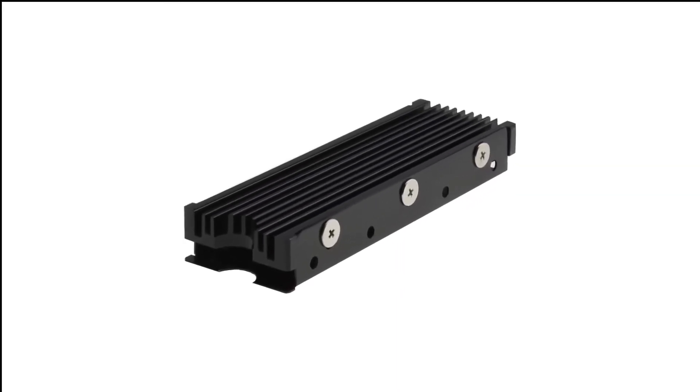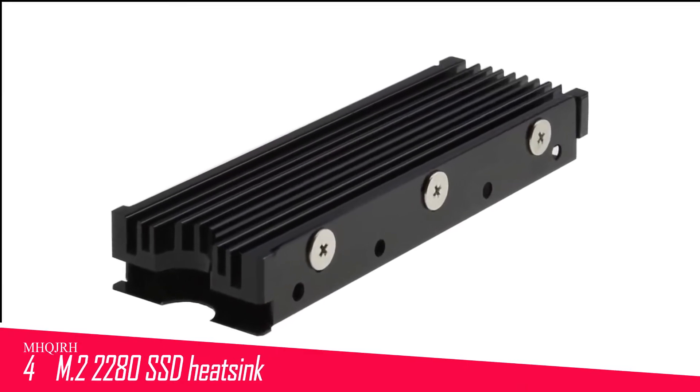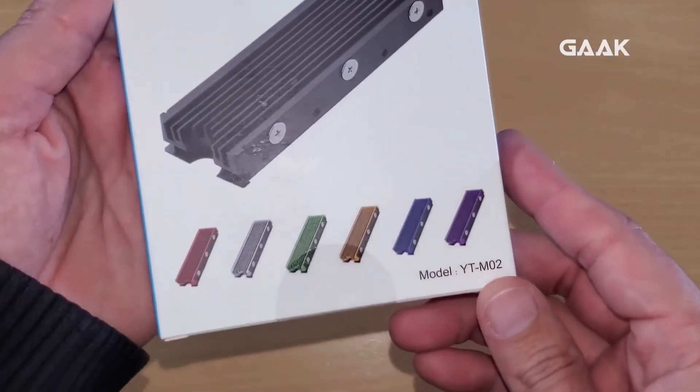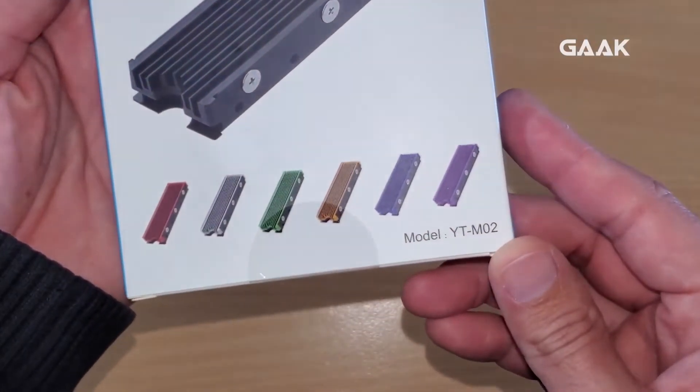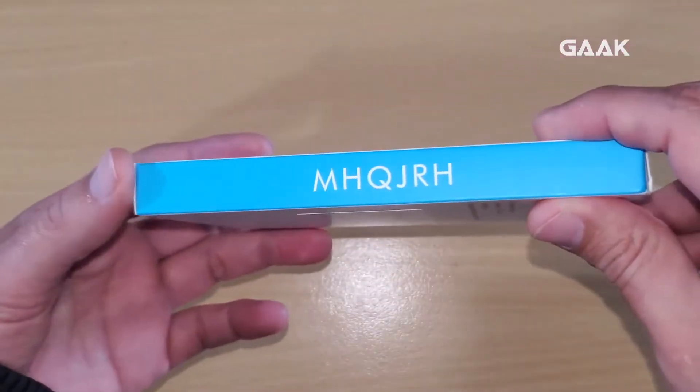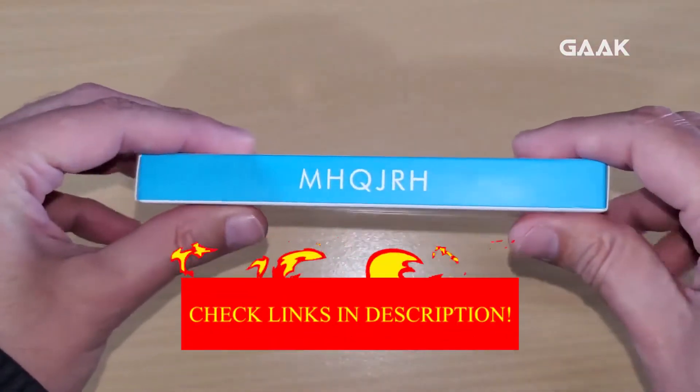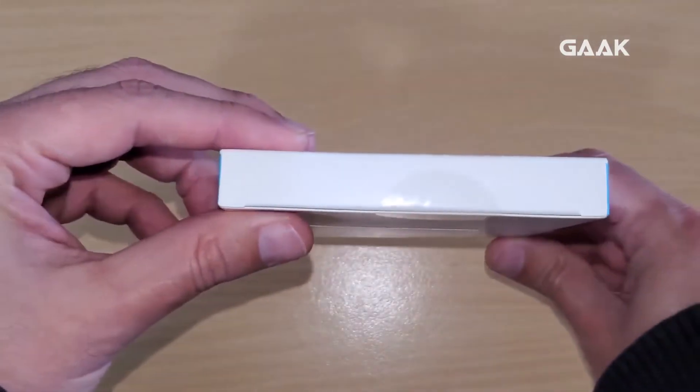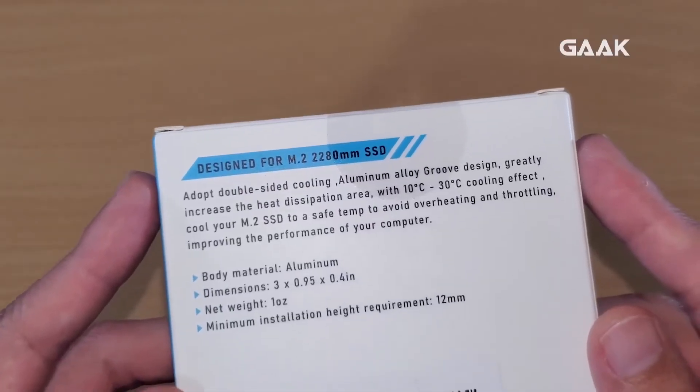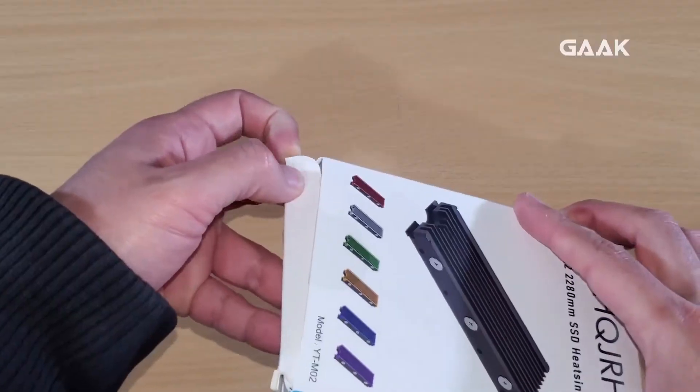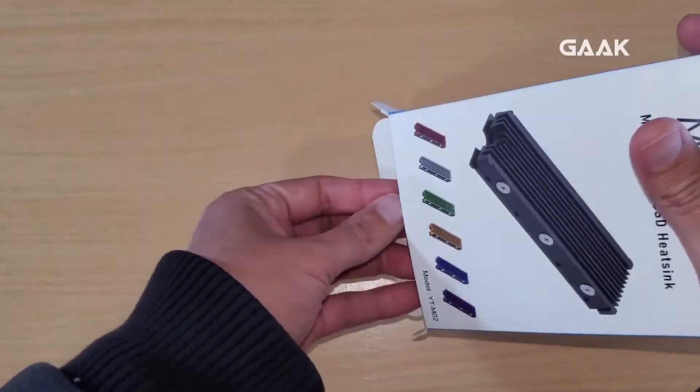Number 4 in my list, MHQ-GRH-M2 2280 SSD Heatsink. When you first take a look at this NVMe heatsink, you'll immediately notice what the main design goal was: to maximize the heat dissipation surface. And they succeeded, with a thin design that helps bring down the temperatures of your NVMe drive by quite a bit.